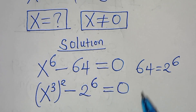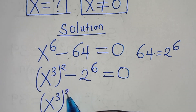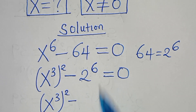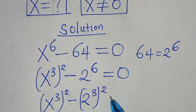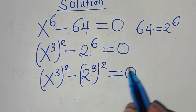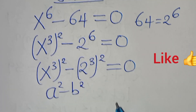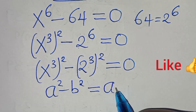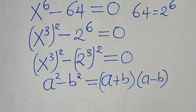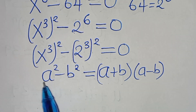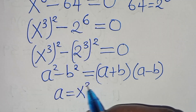So we have x to the power of 3 raised to the power of 2, subtract 2 to the power of 6, which can be expressed as 2 to the power of 3 raised to the power of 2, equals 0. This equation is in the form of a squared minus b squared, which we can express as a plus b times a minus b.